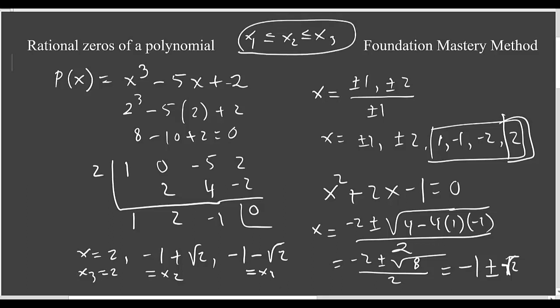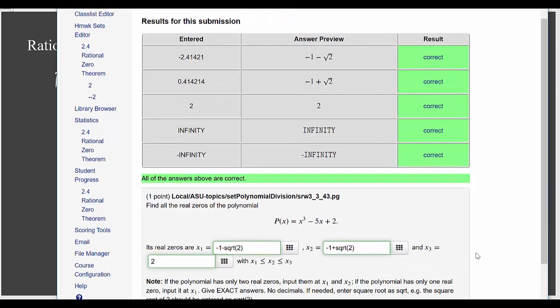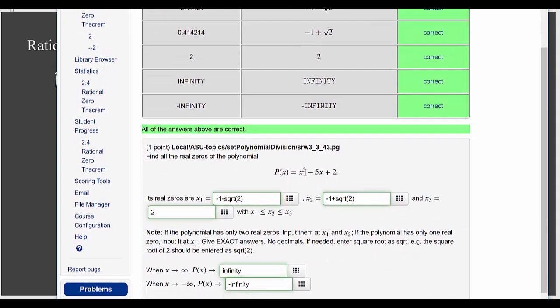Now we'll post it in webwork. And when they're asking for end behavior, we have a power function x³. We've seen in previous sections when x goes to infinity, the right side goes to infinity because the graph looked like this. And when x goes to negative infinity on the left side, the graph goes to negative infinity all the way down.